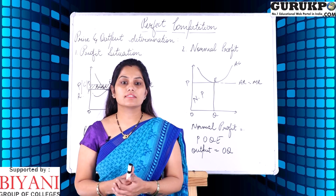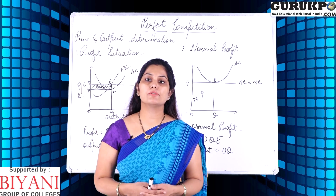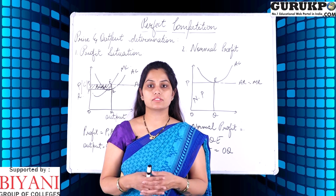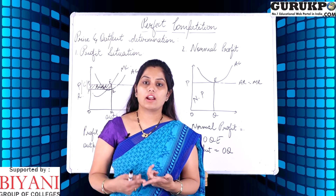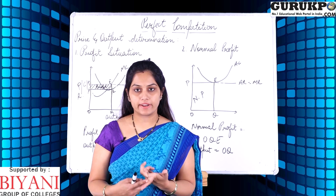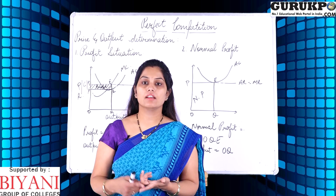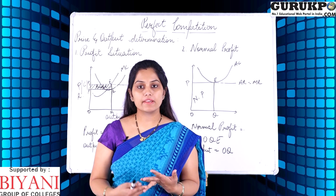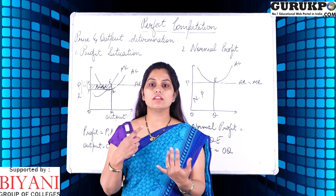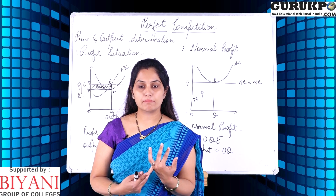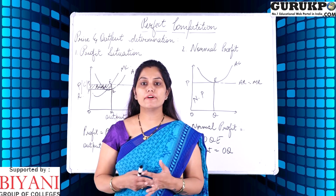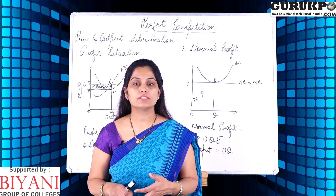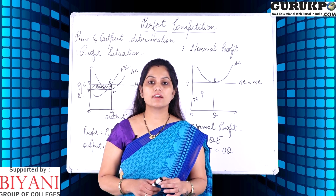Perfect competition is a kind of market structure in which there are large number of buyers and sellers selling homogeneous products at identical prices. The characteristics of perfect competition are: large number of buyers and sellers, identical or homogeneous products, identical prices, free entry and exit of firms, firm is a price taker, perfect knowledge of the market, perfect mobility of all factors of production, and there is no transportation cost.